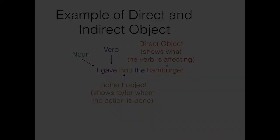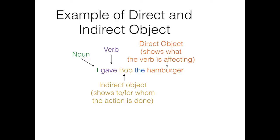So, for example, in the sentence 'I gave Bob the hamburger,' the hamburger is a direct object. It is being given. So, we say it receives the verb. And Bob is our indirect object. The hamburger is being given to Bob.